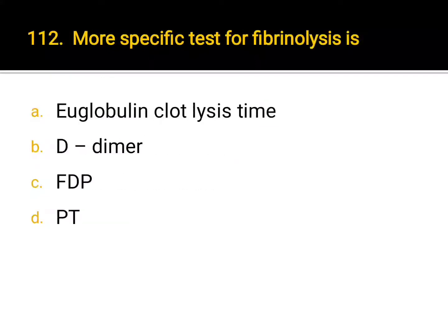More specific test for Factor 8 deficiency is: A. euglobulin clot lysis time, B. D-dimer, C. FDP, D. PT. Correct answer: B. D-dimer.